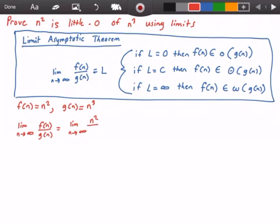So we're going to have the limit as n approaches infinity of n squared divided by n cubed. Now this is equal to the limit as n approaches infinity of 1 divided by n. And this of course is equal to 0, and 0 is our limit L.